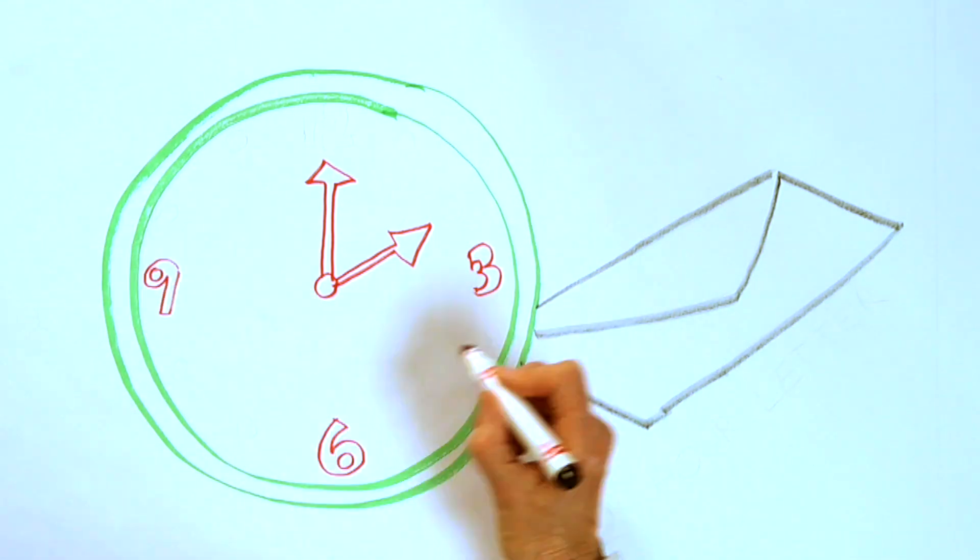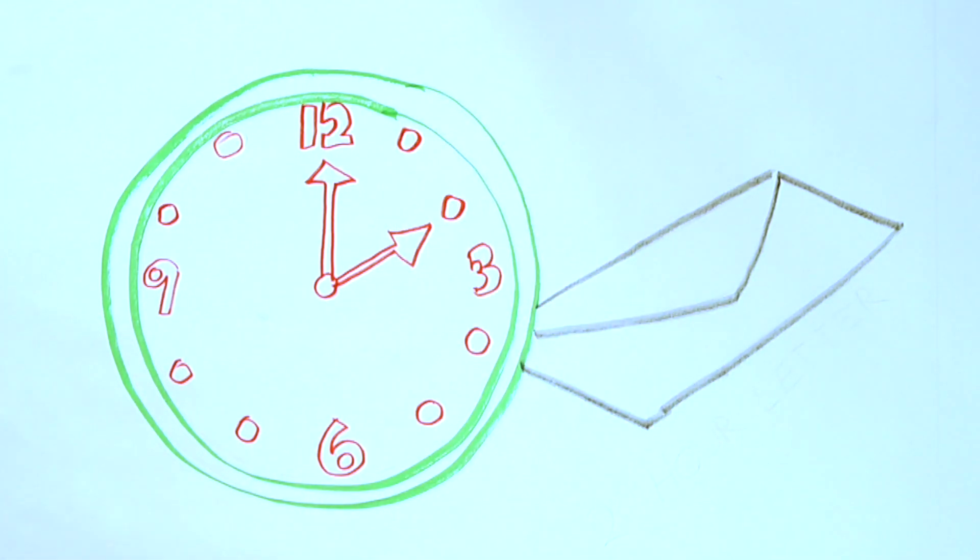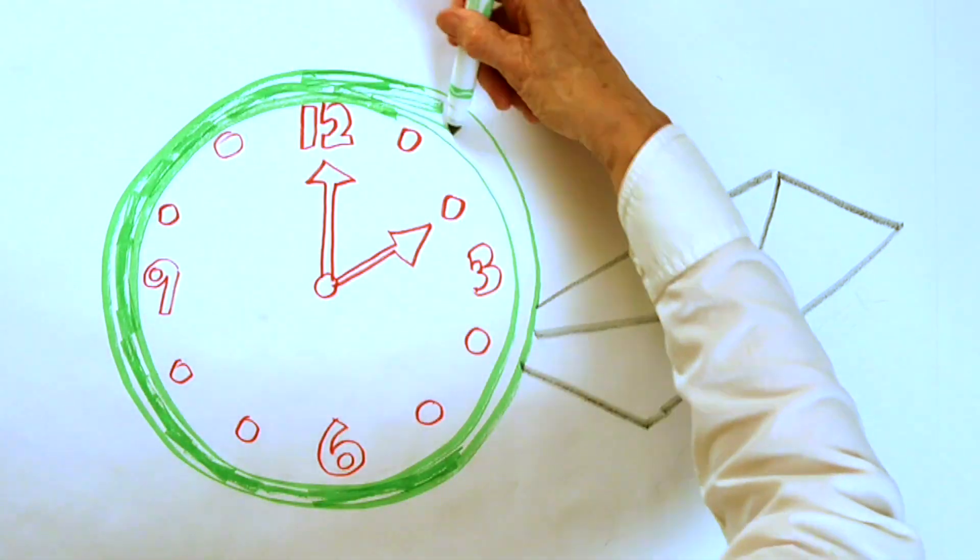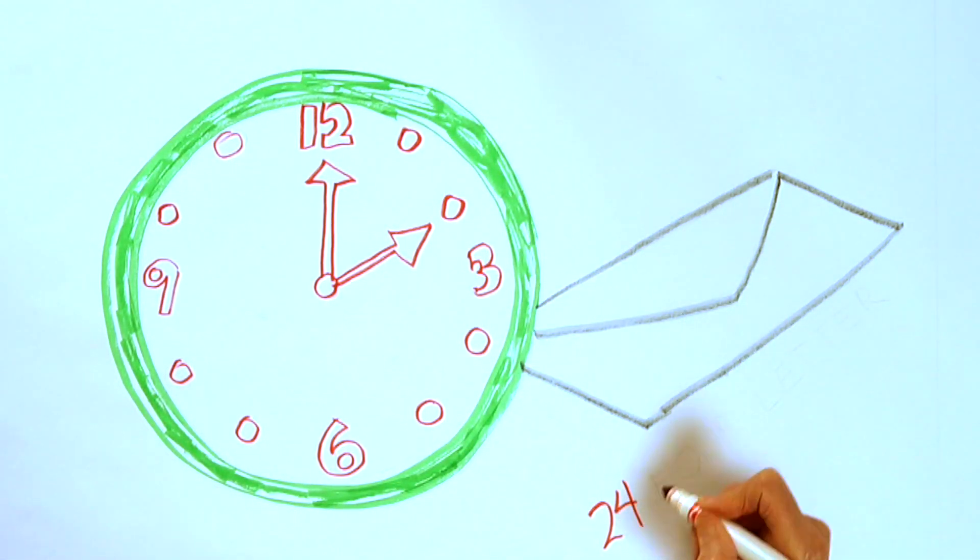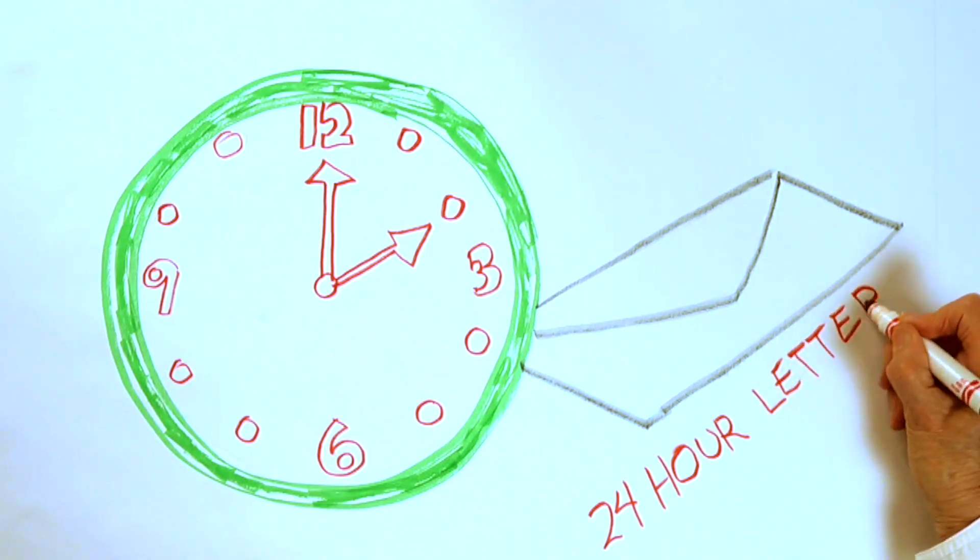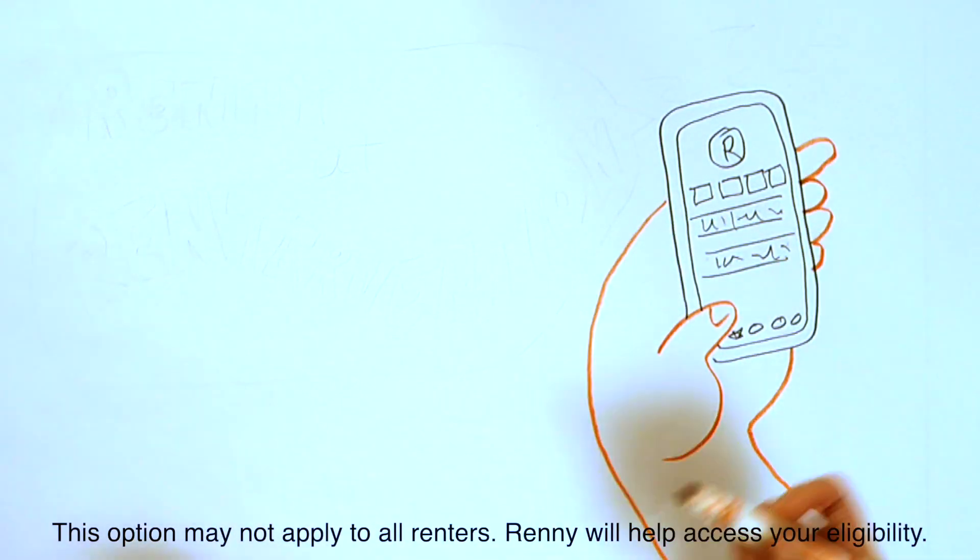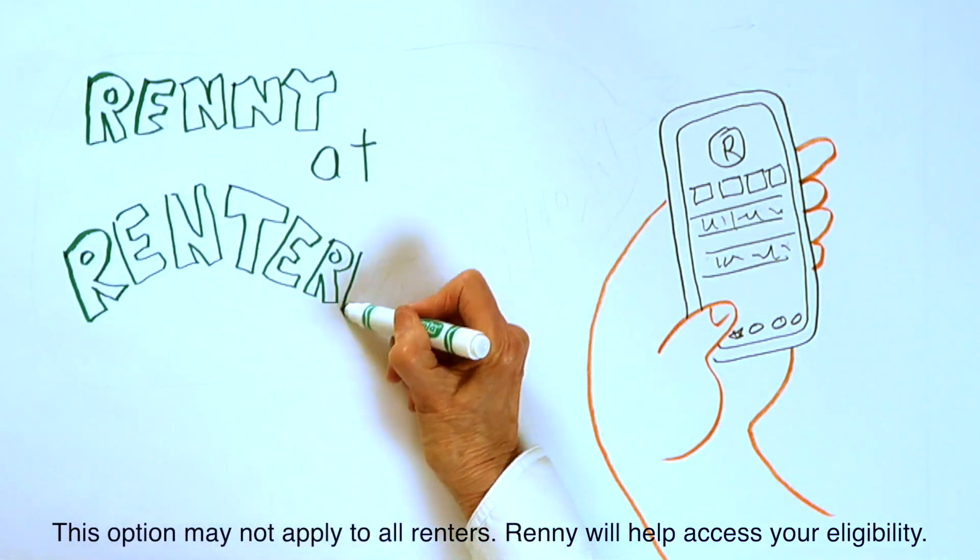Your landlord cannot retaliate against you for requesting repairs. This includes raising rent, terminating your tenancy, or threatening to file an eviction. Rennie at Rentervention can help you draft a letter in a matter of minutes.